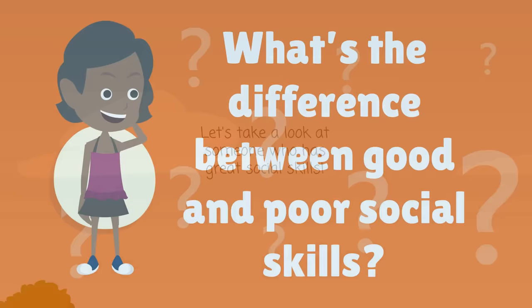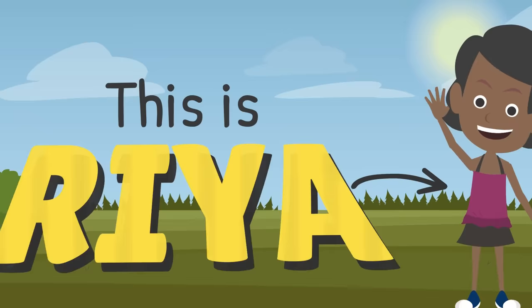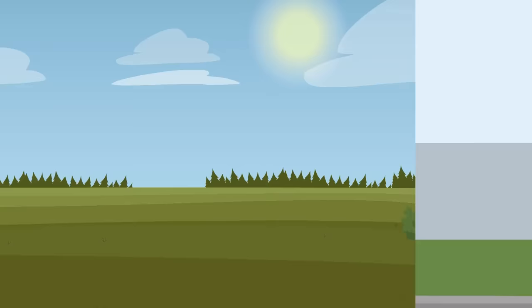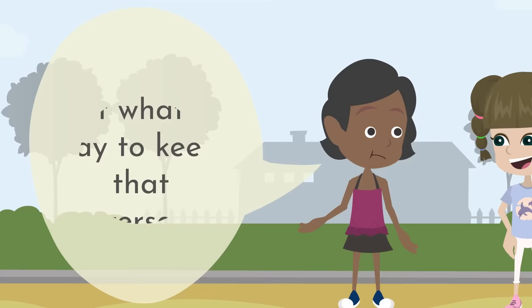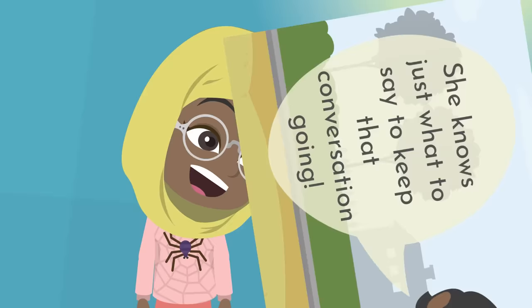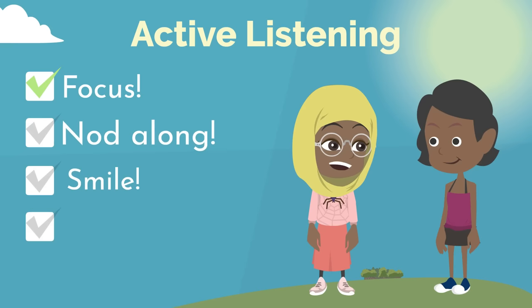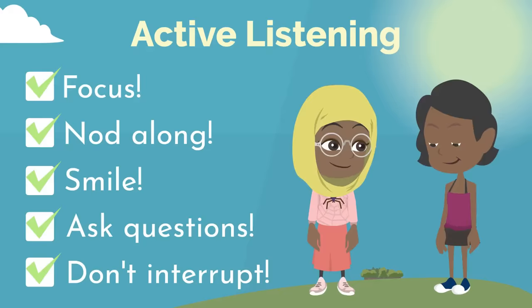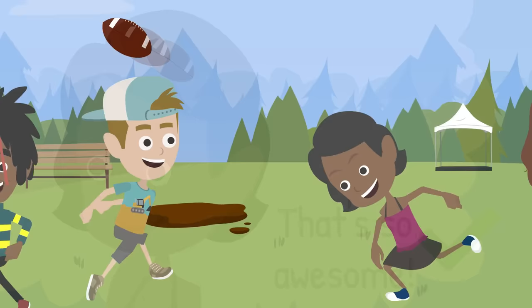So what's the difference between good and poor social skills? Well, first let's take a look at someone who has great social skills. This is Ria. Ria does a good job starting a conversation with her peers and she knows just what to say to keep that conversation going. She lets others have a turn to talk, and when they're talking she is focused and shows them that she is listening — she nods along, smiles, and asks questions, all without interrupting. When it's her turn to speak, Ria thinks about what she wants to say before she says it.